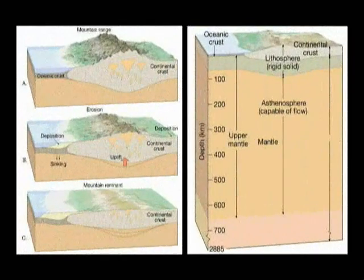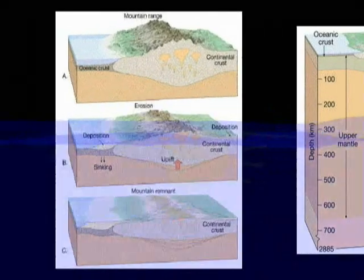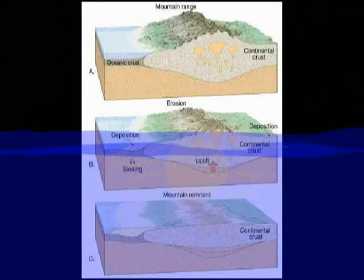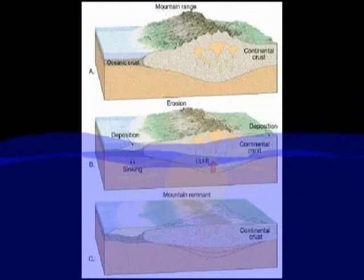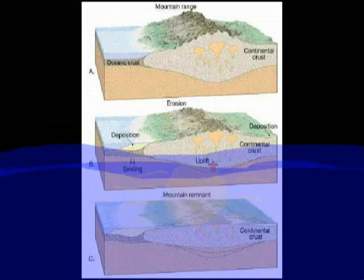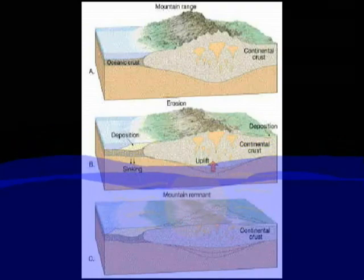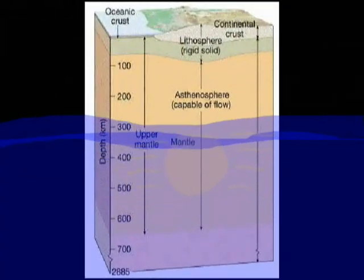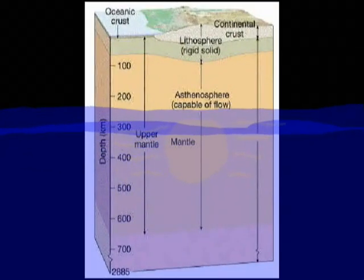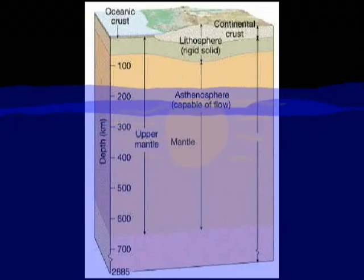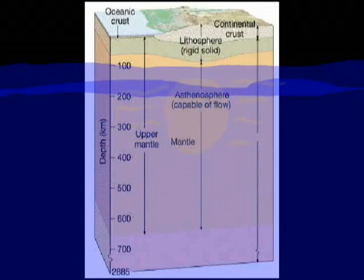Isostatic uplifting also affects global sea levels. When large amounts of water are tied up in continental glaciers, oceanic crust will rise due to the loss of weight affecting the ocean basins. After deglaciation occurred, redepression of the oceanic crust begins because of the increased pressure. The rise of sea level is reduced because of the increase in volume of ocean basins. Hence, isostatic uplift has an important role in hydroisostacy.